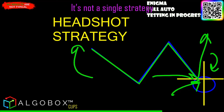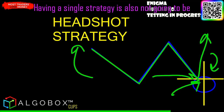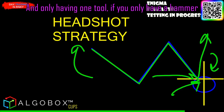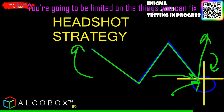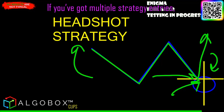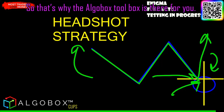It's not a single strategy. People throwing all their eggs into one basket, having a single strategy, is not going to be helpful for you. It's like going into your garage and only having one tool — if you only have a hammer, you're going to be limited on the things you can fix. If you've got multiple strategy entries, it's like going into your garage and having multiple tools. That's why the Algobox Toolbox is there for you.